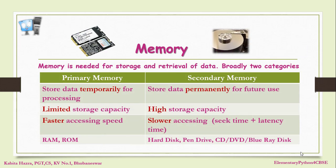Memory is one of the important units of a computer. It is used for storing and accessing data. Basically, memory can be divided into two categories: primary memory and secondary memory. Primary memory is used for temporary storage of data during processing, whereas secondary memory is used for permanent storage of data in secondary storage devices like a hard disk. Primary memory has limited storage capacity but is faster, while secondary memory has high storage capacity but is slower, because the access time in secondary memory equals the seek time plus latency time.